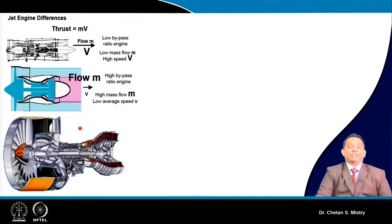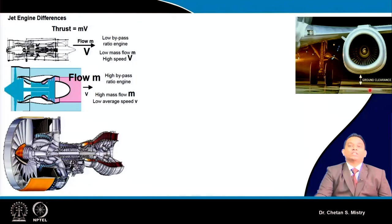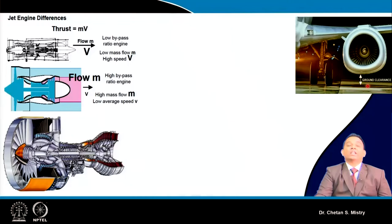In the high bypass ratio engine, since 70 percent of thrust comes from the fan, the idea is to increase the fan diameter. However, increasing the fan diameter reduces ground clearance, which risks the engine touching the ground during takeoff or landing, causing engine and aircraft failure. This constraint means you cannot increase the engine diameter beyond a certain range.